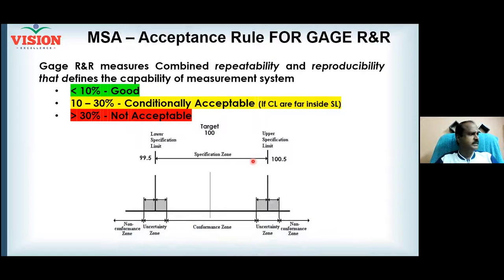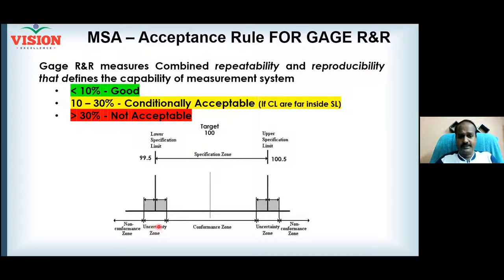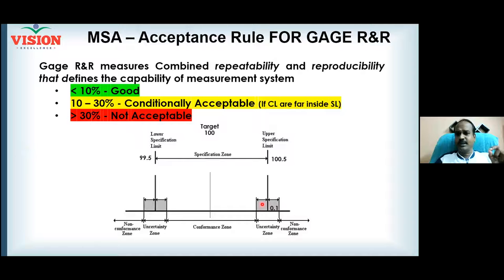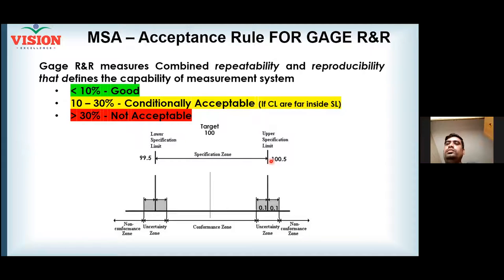This brings us to the uncertainty zone. The gauge R&R percentage defines the fraction of the range that is at risk. If Gauge R&R is 10%, then 10% of the specification range is in the uncertainty zone — on both the left and right sides. The specification range here is 100.5 minus 99.5, which equals 1. Ten percent of 1 is 0.1. So the last 0.1 mm from the specification limit is under heavy risk. The message is: do not produce products within 0.1 mm of the specification limit.